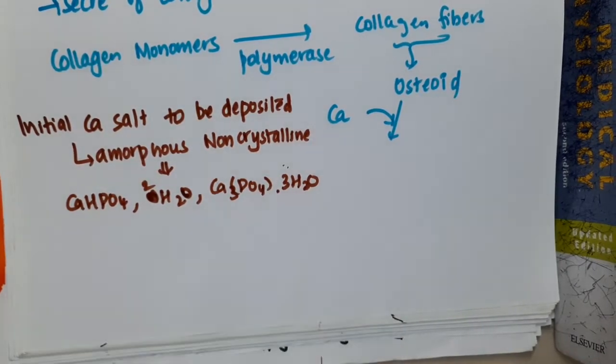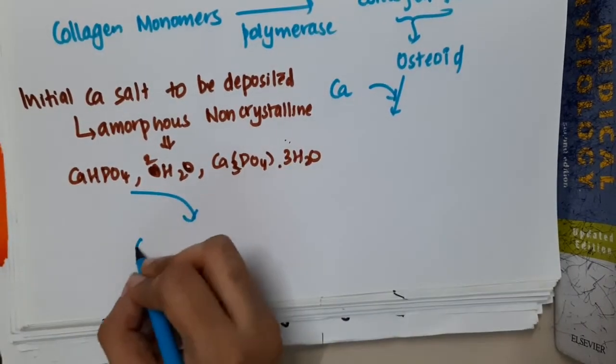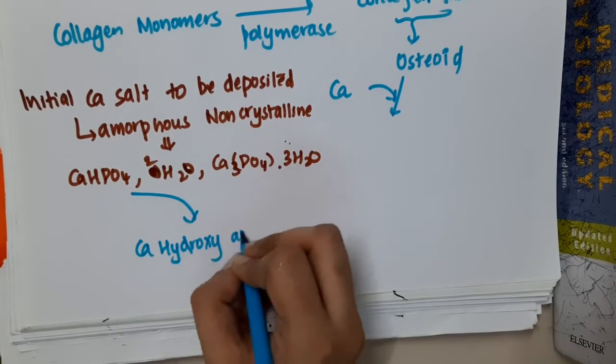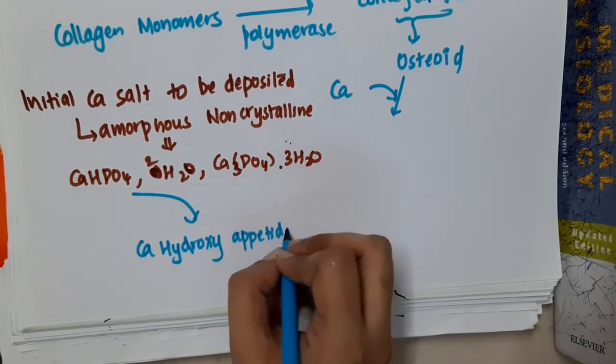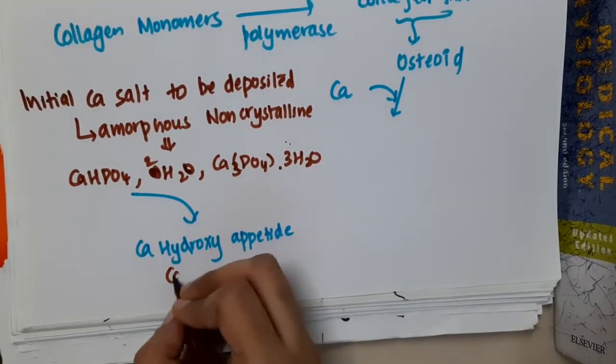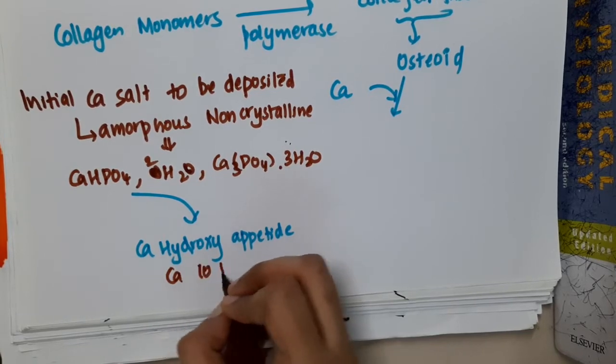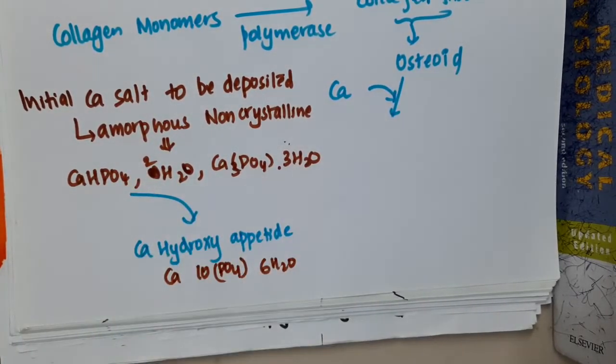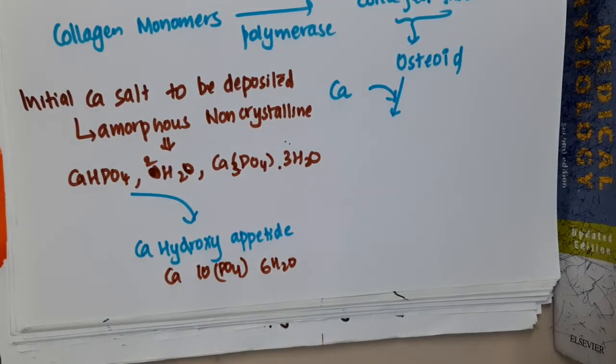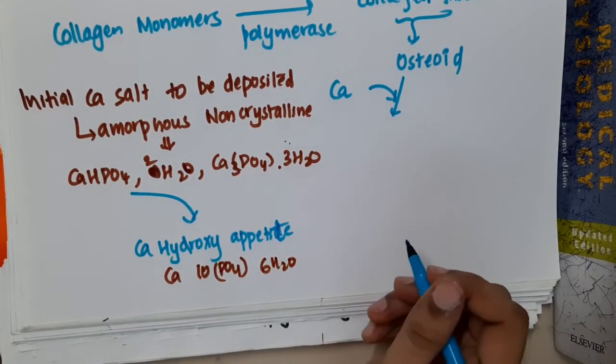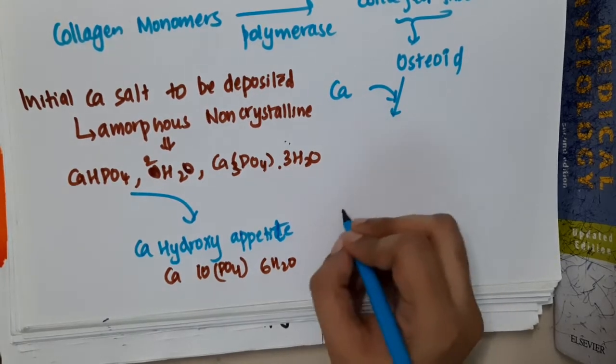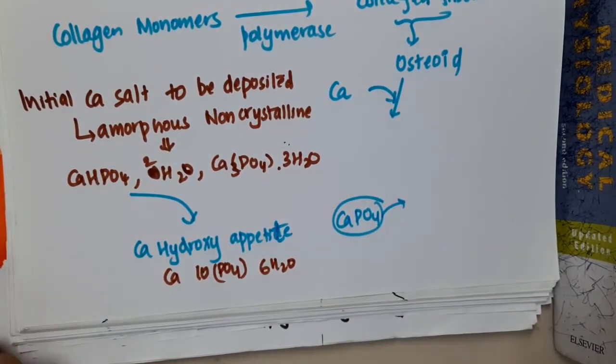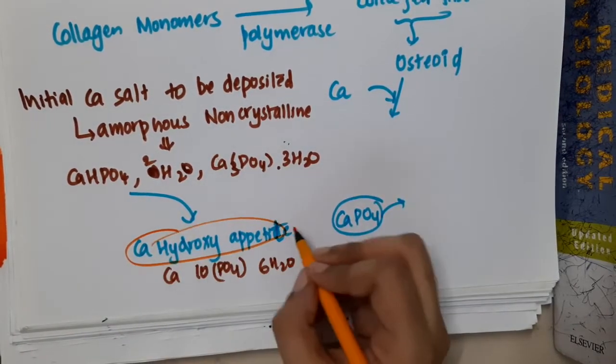This will form calcium hydroxyapatite. In this calcium hydroxyapatite, the calcium phosphate in these crystals is taken up by osteoblasts from the blood.